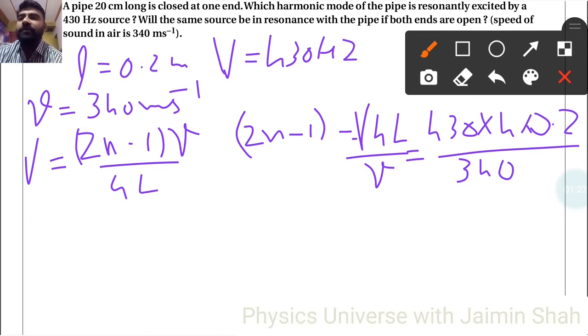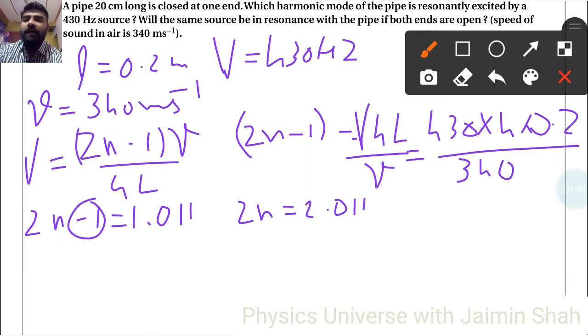So that is 1.011. So here 2N minus 1 equals 1.011. 2N equals 2.011 because minus 1 will be on the right-hand side, so plus 1, 2.011. And that value upon 2, so N equals 1.0055. So it is nearly equal to 1. So we will get resonance for that fundamental frequency when closed at one end.